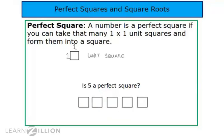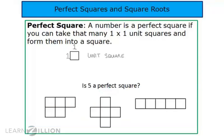Is five a perfect square? Well, no matter what I do, I cannot form five one-by-one unit squares into a square. We have each of these different configurations here, but none of them are squares. Therefore, five is not a perfect square. Now, five actually does have a square root, but its square root won't be a whole number — it will be a decimal number. We will discuss that in a future lesson.